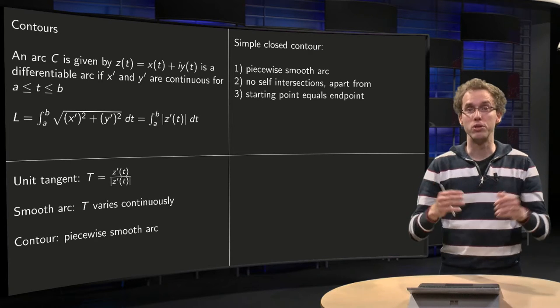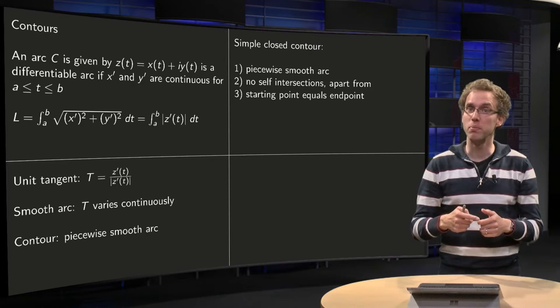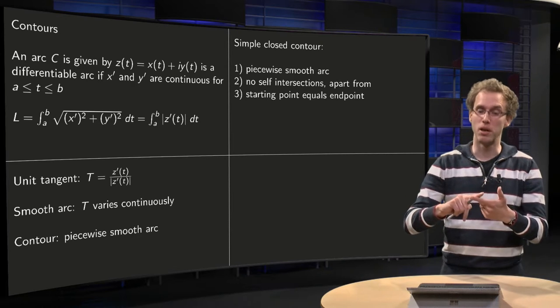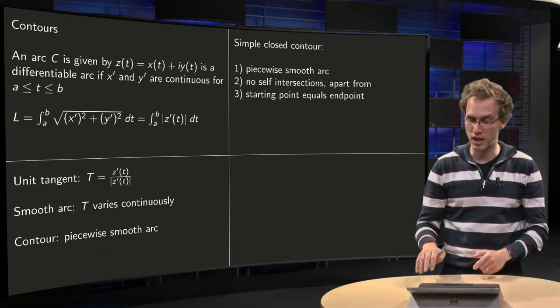And then we usually use a simple and closed contour. So what does that mean? With a piecewise smooth arc we have no self intersections apart from the start point which equals the end point.